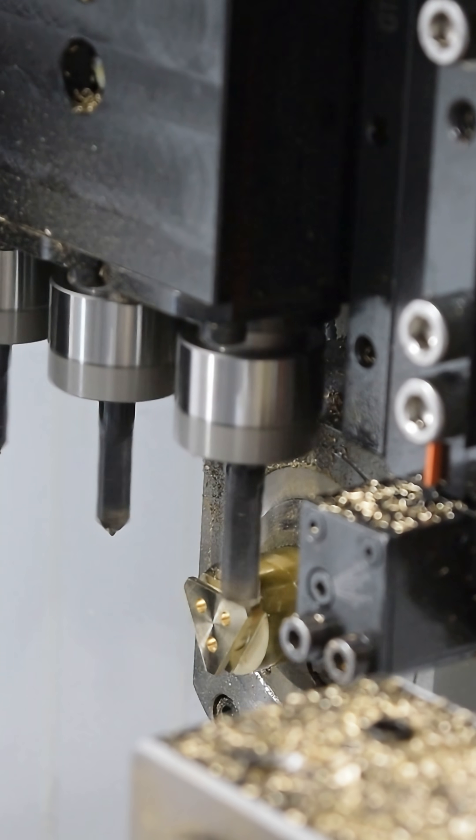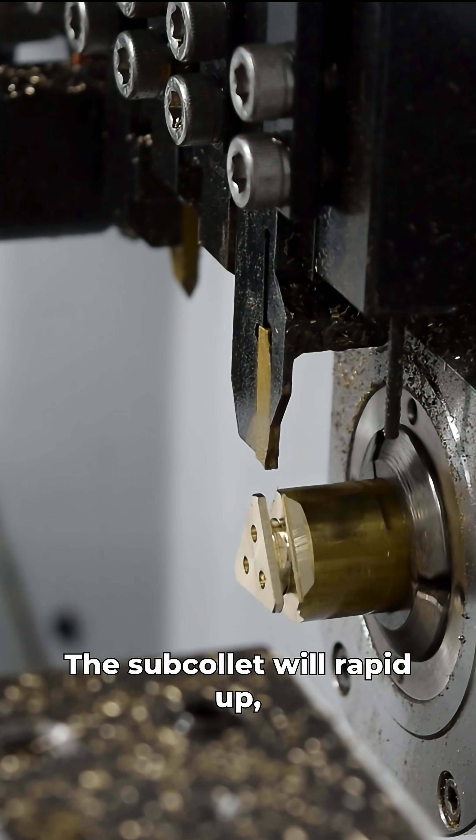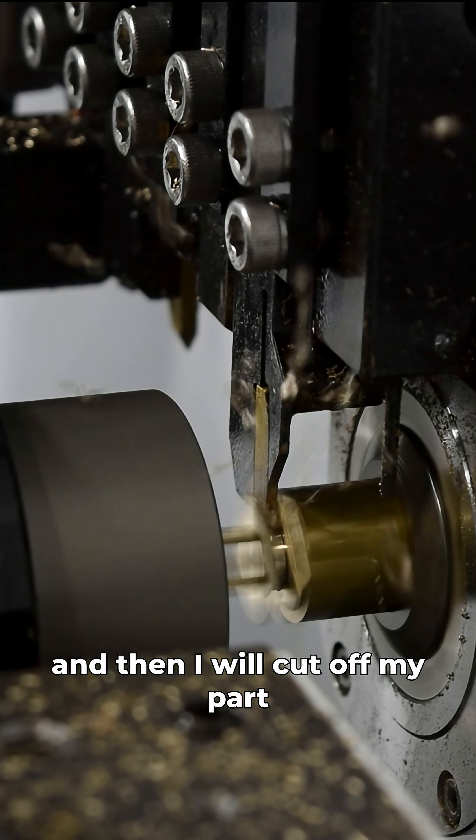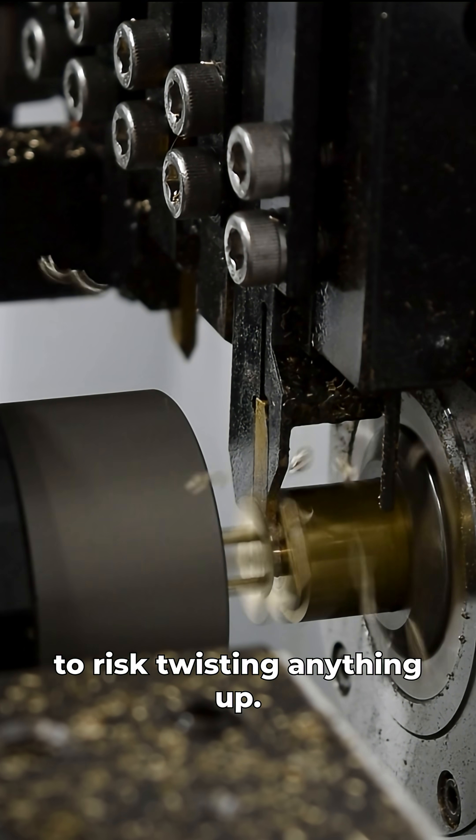And then once the triangle is done, here's where the magic really happens. The sub collet will grab it up, press fit those pins into the part, and then I will cut off my part very slowly because I didn't want to risk twisting anything up.